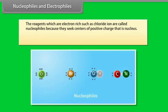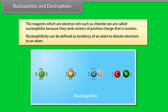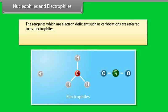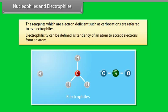Nucleophiles and electrophiles: reagents which are electron rich, such as the chloride ion, are called nucleophiles because they seek centers of positive charge, that is, the nucleus. Nucleophilicity is defined as the tendency of an atom to donate electrons. Reagents which are electron deficient, such as carbocations, are referred to as electrophiles. Electrophilicity is defined as the tendency of an atom to accept electrons.